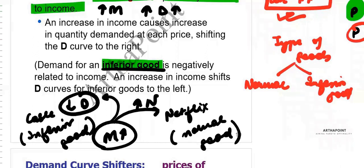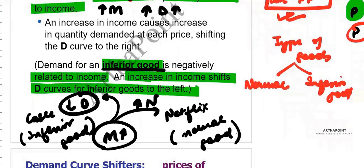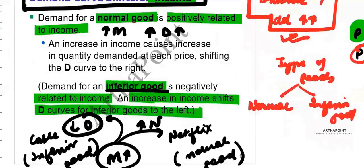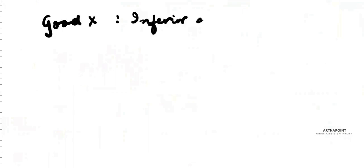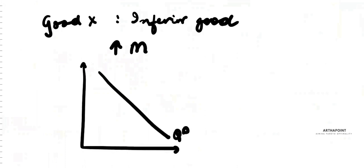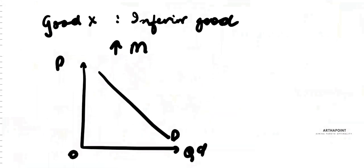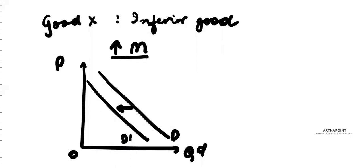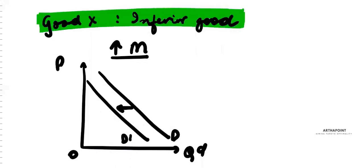Demand for an inferior good is negatively related to income — an increase in income will shift the demand curve to the left. If good X is an inferior good and there is an increase in your income level, your demand will decrease and the curve shifts left. An increase in income decreases the demand for inferior goods.